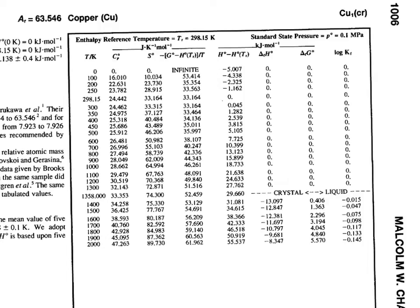This next column uses a somewhat unusual symbol — it represents entropy minus the entropy at the reference temperature. By convention the reference temperature is 298 K, and the enthalpy at 298 is defined as zero. So this column is really just giving us the enthalpy or change in enthalpy that we would find by integrating n·Cp·dT.